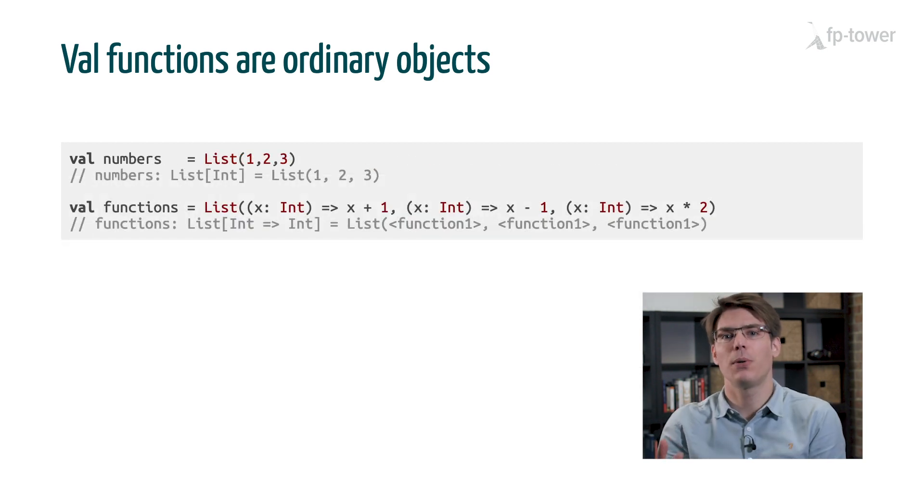So finally, to drive the point home that functions are ordinary objects, let's have a look at data structures. In many programming languages, we cannot have a data structure of functions, because in those languages, functions are not data. It's not something we can store in a variable. However, in Scala, we don't have this limitation, as we can see it here. I created a list containing three functions, so that we can look them up by indices.